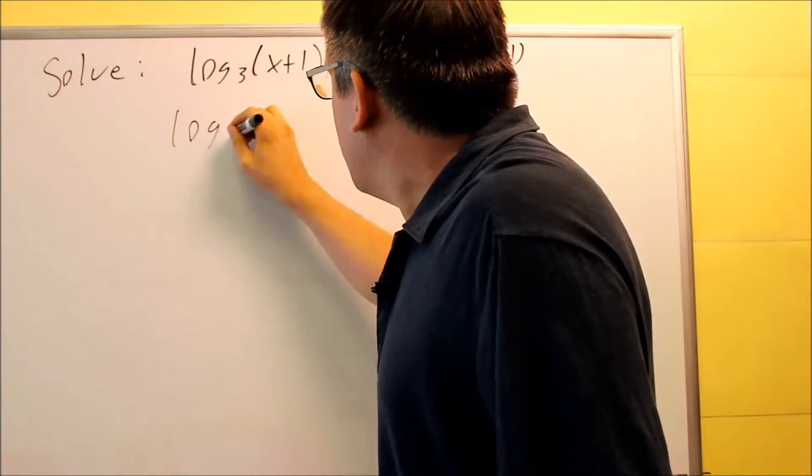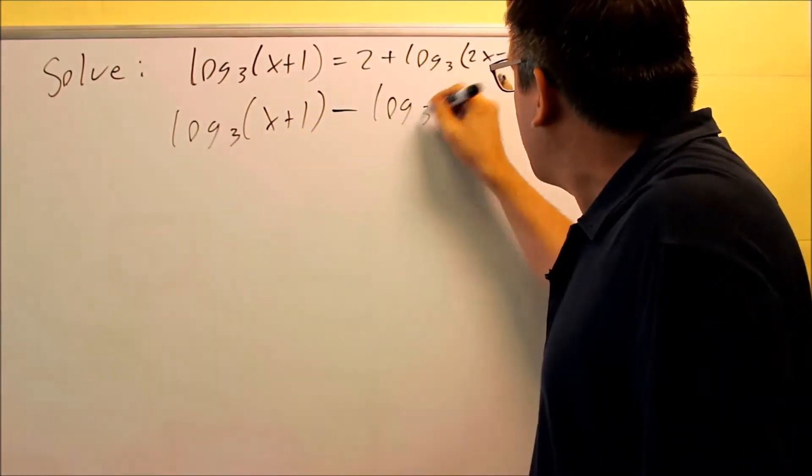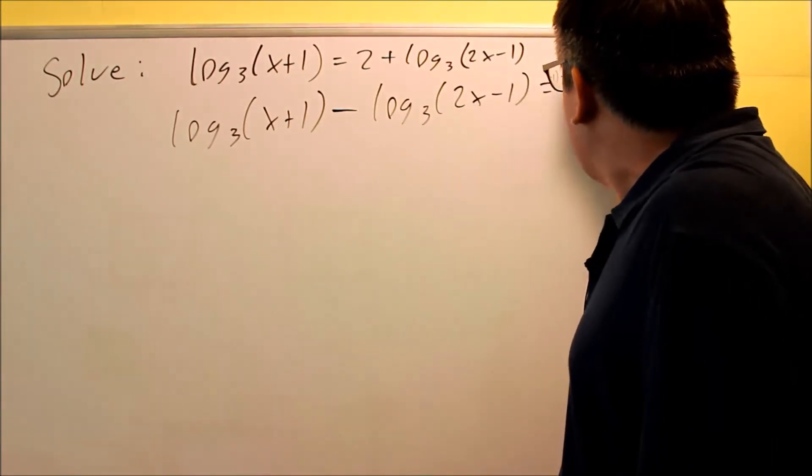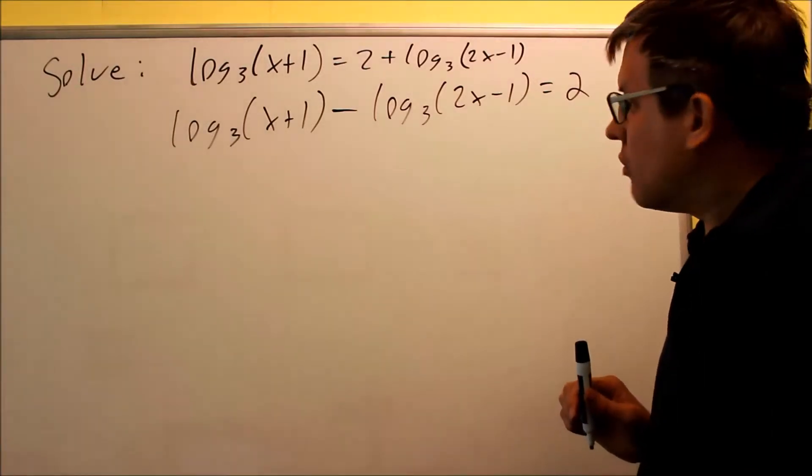So you have log 3, x plus 1. We're subtracting this log, bringing it over. We have minus log 3, 2x minus 1. That's going to equal 2. So again, that's going to change signs because we brought it across the equal sign.